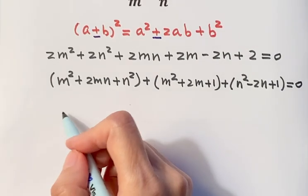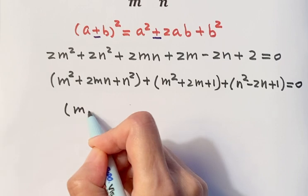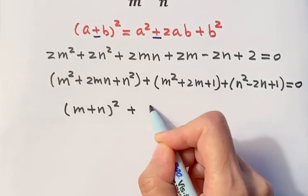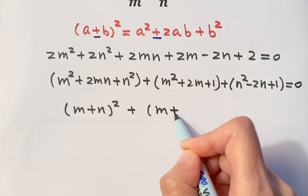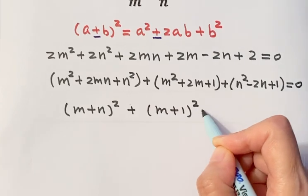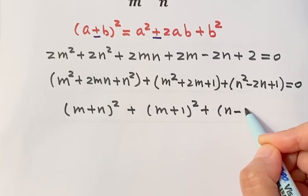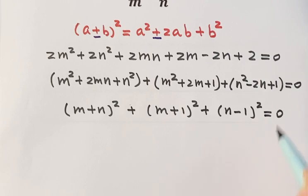So then the first one, m plus n squared. The second one, m plus 1 squared. The third one, n minus 1 squared equals 0.